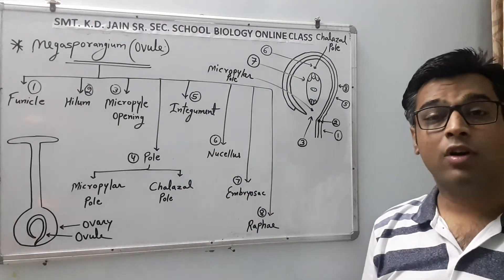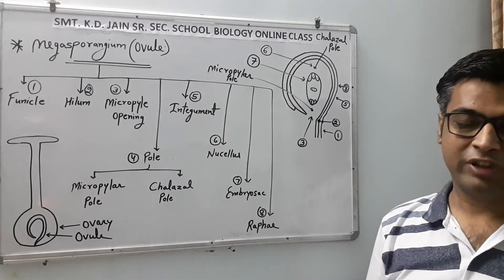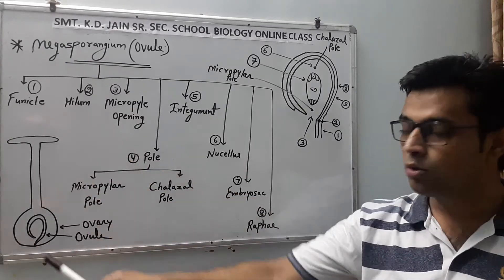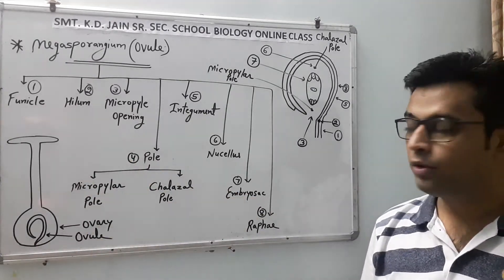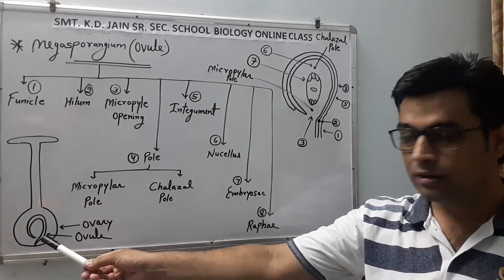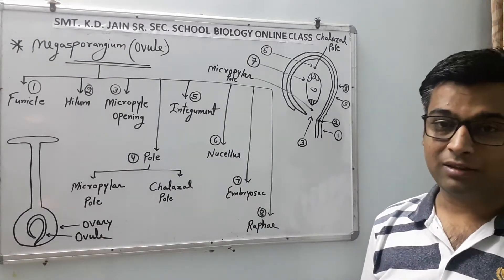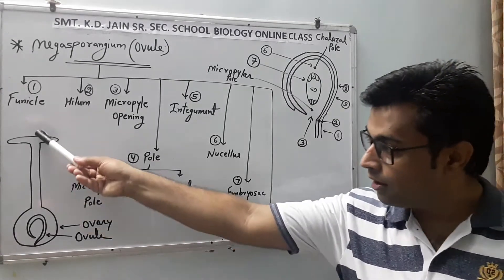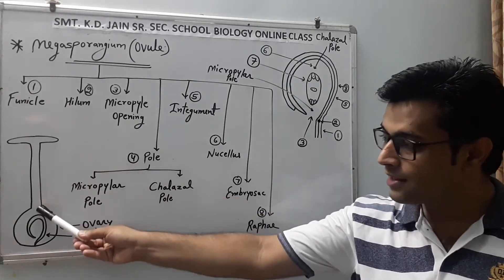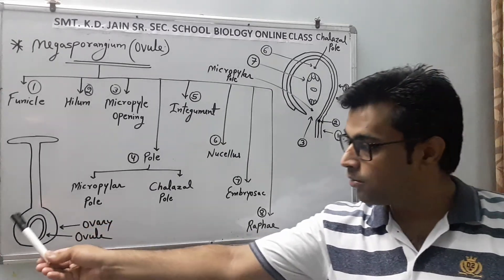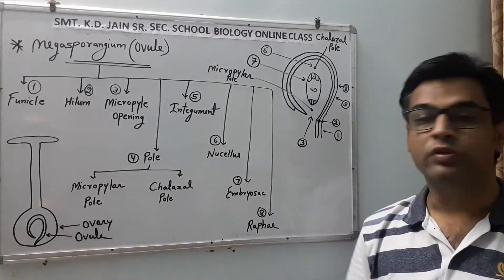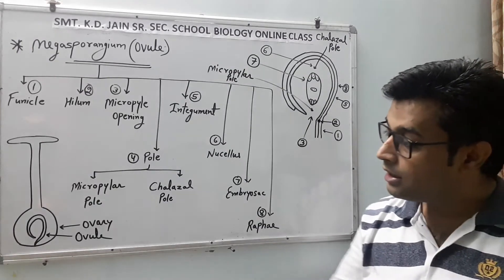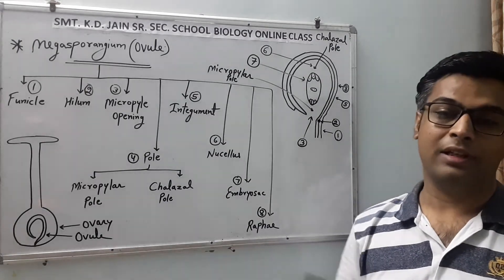First question: what is Megasporangium? Very simple — it is the structure of Gynoecium. The unit of Gynoecium is Pistil, and Pistil has three parts: the upper part is Stigma, the middle tube-like structure is Style, and the bottom structure is Ovary. Inside the Ovary, the Ovule is present.